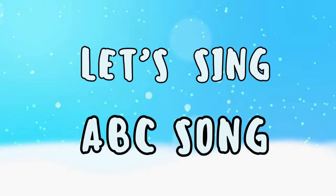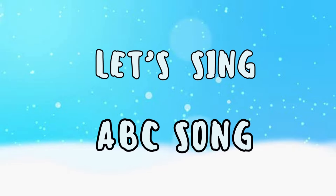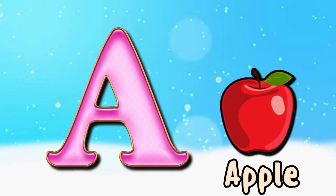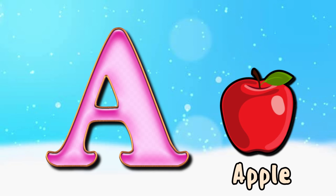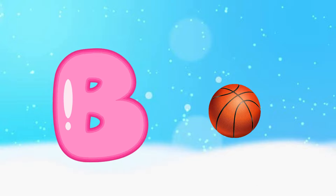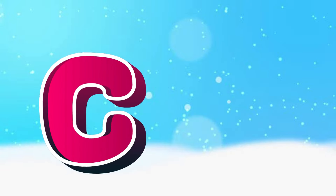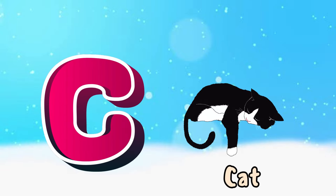Dum-dee-da-dum-dum-dum. A is for apple, a-a-apple. B is for ball, b-b-ball. C is for cat, c-c-cat. D is for dog, d-d-dog.